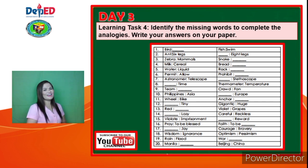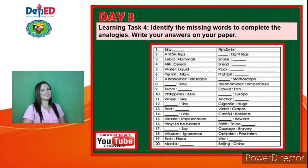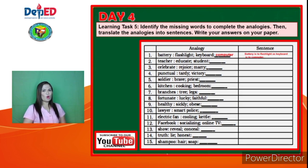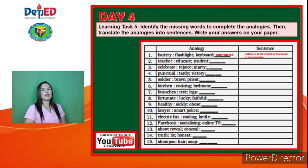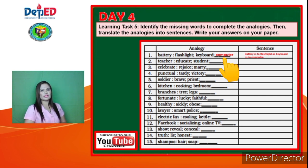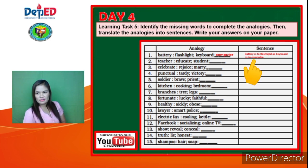Day 3, Learning Task 4: Identify the missing words to complete the analogies. Write your answer on your piece of paper. Day 4, Learning Task 5: Identify the missing words to complete the analogies, then translate the analogies into sentences. Write your answer on your paper. The first one is done for you: Battery is to Flashlight as Keyboard is to Computer — you are going to translate it into a sentence.